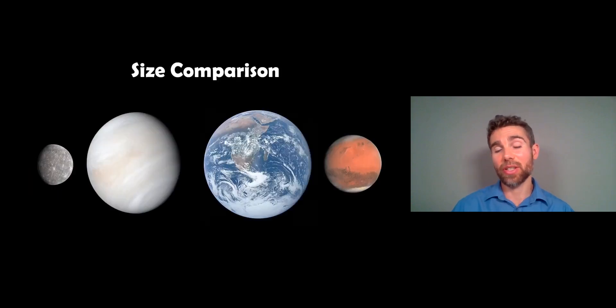Now for size comparison, we've got Mercury on the left and that's our smallest one, and then you have Mars which is on the furthest right, that's the next smallest, and then Venus and Earth are actually fairly similar in size. So Venus is a little bit smaller than Earth, but Earth is the largest terrestrial planet that we have.